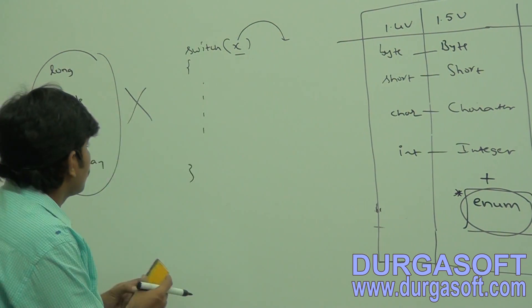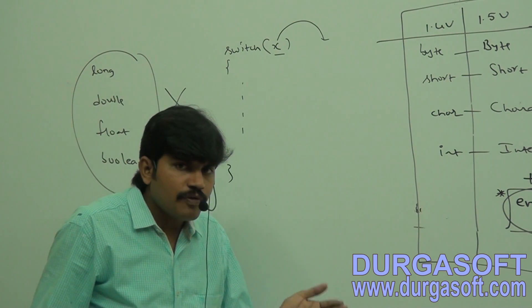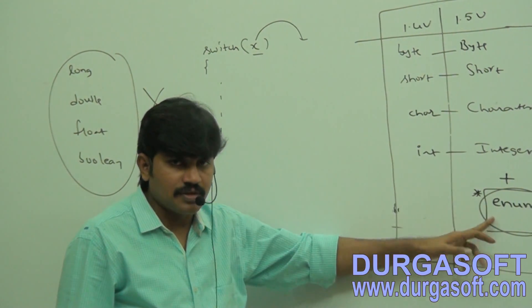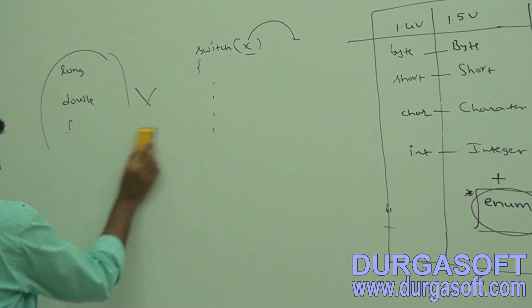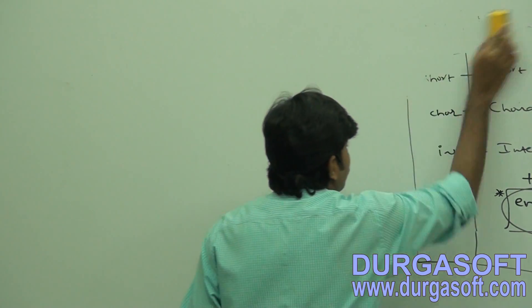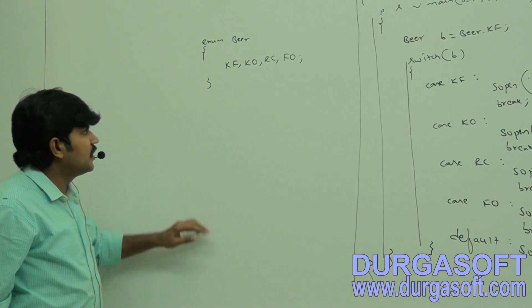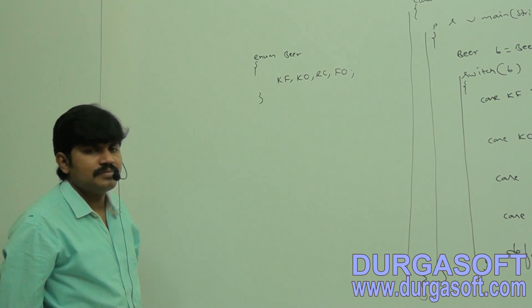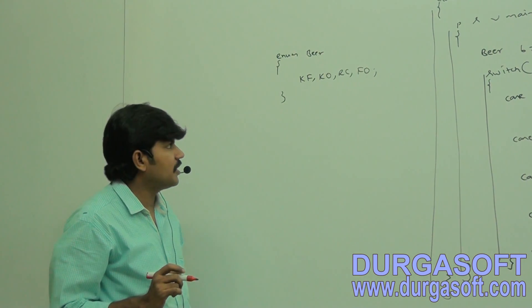Now let me take one simple example to show how to use enum as an argument to a switch statement.